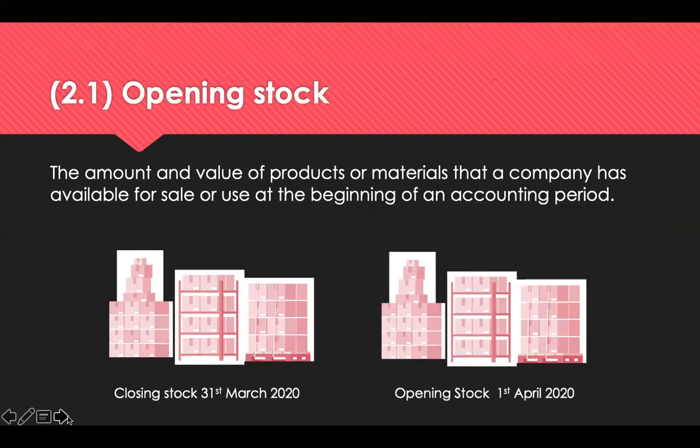Opening stock is a current asset, since it's expected that the asset will be used up in whole or in part in the current period. You won't see it on a balance sheet, since the balance sheet contains assets present at the end of an accounting period, not at the beginning. That said, opening stock is simply the previous accounting period's closing stock, which means the figure does appear on the balance sheet under a different name. The main relationship between opening stock and closing stock is captured on the balance sheet.